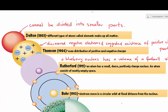Today we are going to learn about the development of the atomic theory. First we have Dalton, who proposed that different types of atoms, called elements, combine together to make matter that we see in our daily life. Based on Dalton, an atom looks like a solid sphere that cannot be divided into a smaller part, so it is considered indivisible.